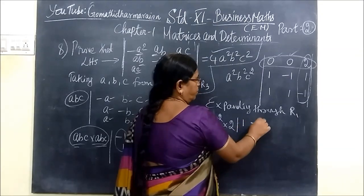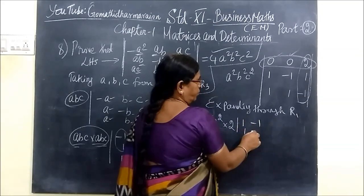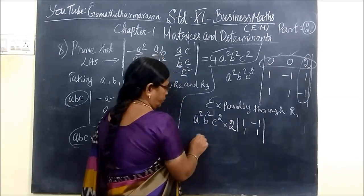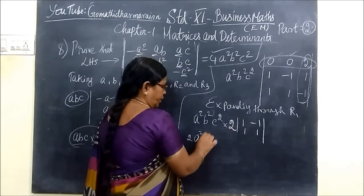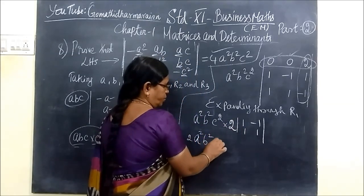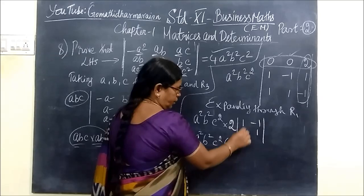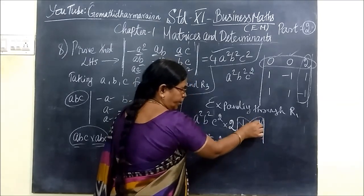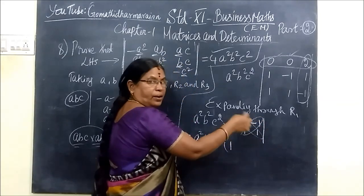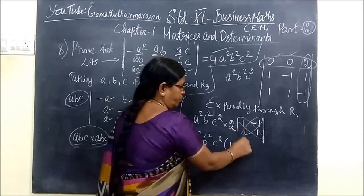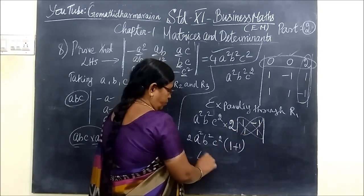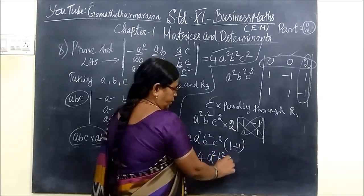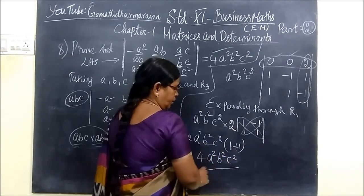Then the determinant of 1, minus 1, then 1, 1. So 2A²B²C². Then this is the multiplier pattern. In a squared way, minus, now plus. So 2 plus 2 gives 4A²B²C².